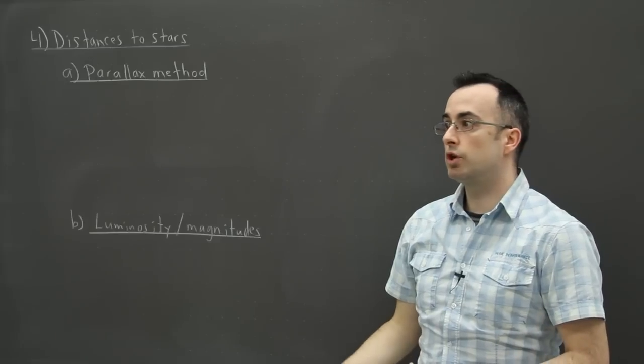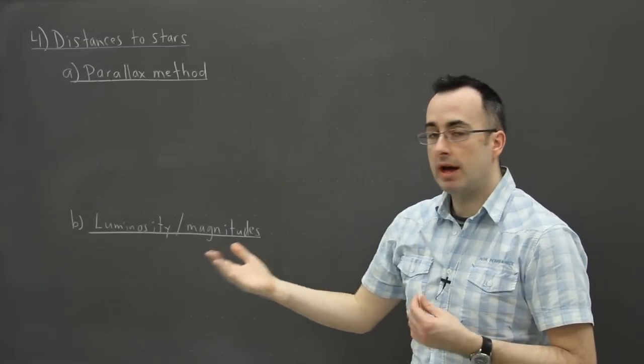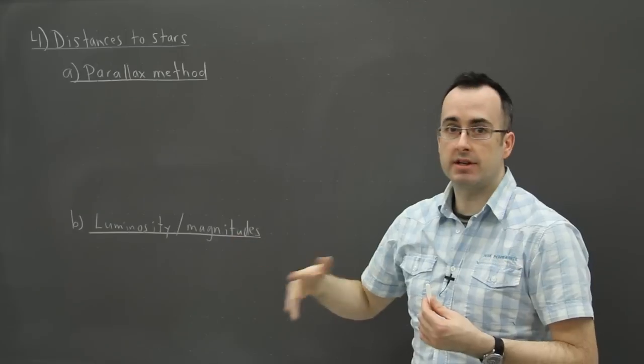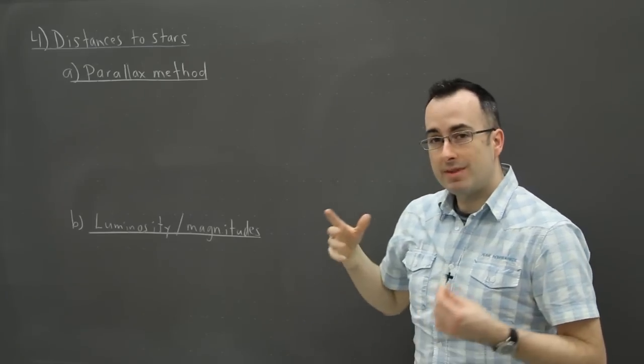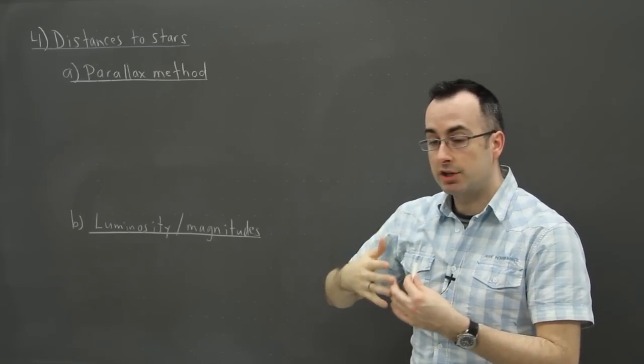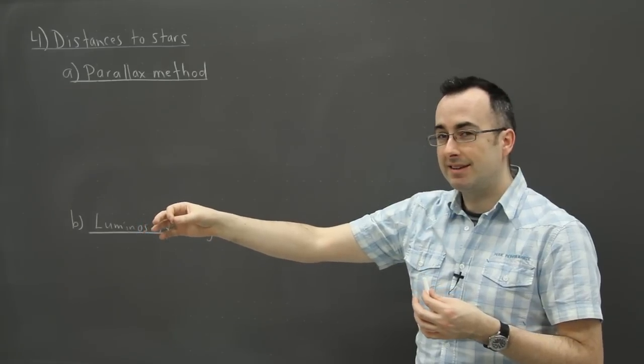In astrophysics, we're often concerned with finding the distance to a star. Once we know that, we can determine lots of other properties about them. But finding the distance to something without actually traveling there to physically measure it gets pretty tough.